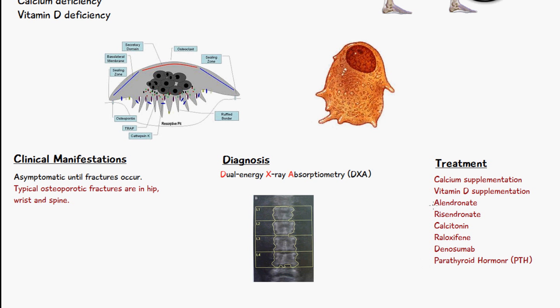Those medications include alendronate, risedronate, calcitonin, and raloxifene. Alendronate and risedronate directly inhibit the action of osteoclasts. We also have parathyroid hormone, which is the only current agent that can actually stimulate bone formation. Additional treatment options include raloxifene, denosumab, and calcitonin.